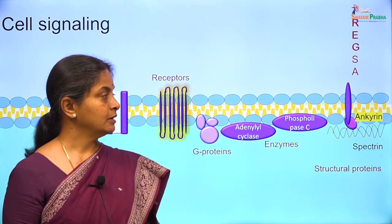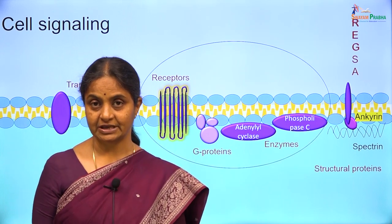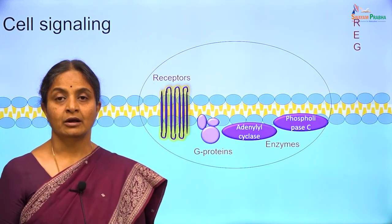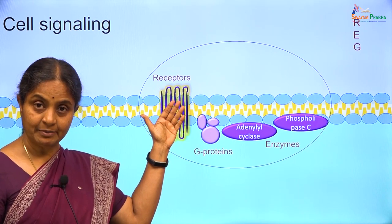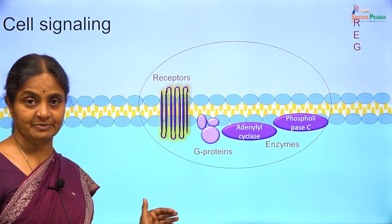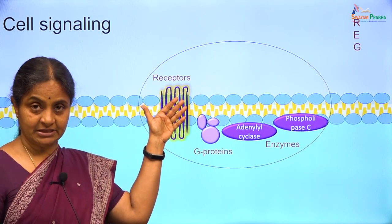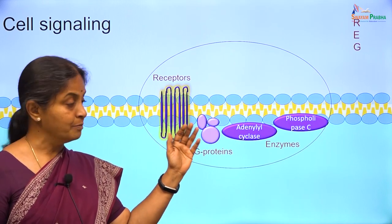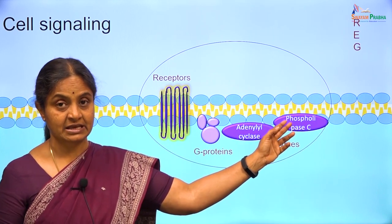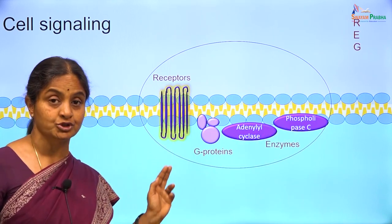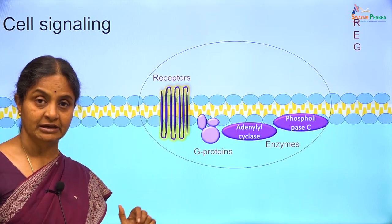In this session, we will make repeated references to the REG of TREXA: receptors, enzymes, and G proteins. While all external signals must bind to a receptor, the receptor can be a membrane receptor or a cytoplasmic receptor. When external signals bind to a membrane receptor, further steps along the pathway may or may not involve G proteins and membrane enzymes. There may be other pathways through which a membrane receptor brings about a cellular response.